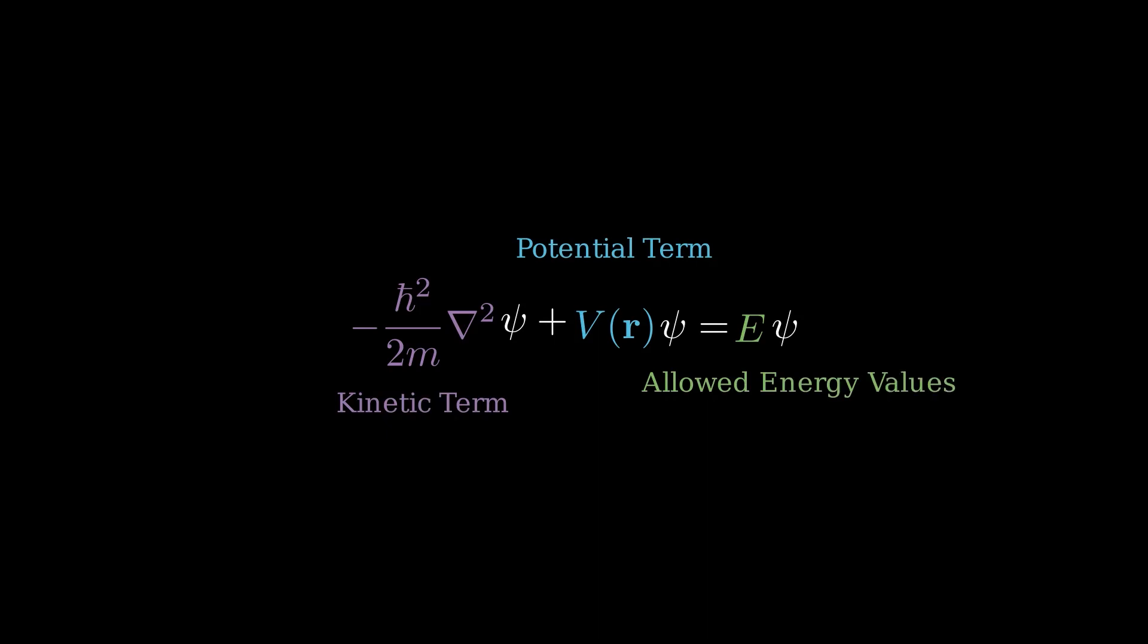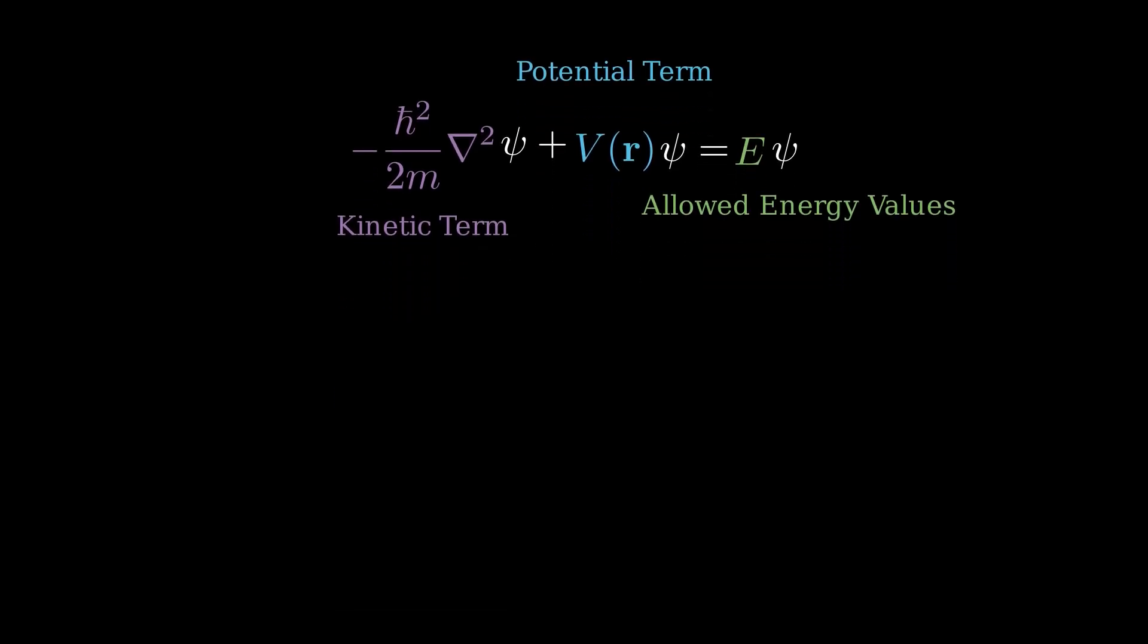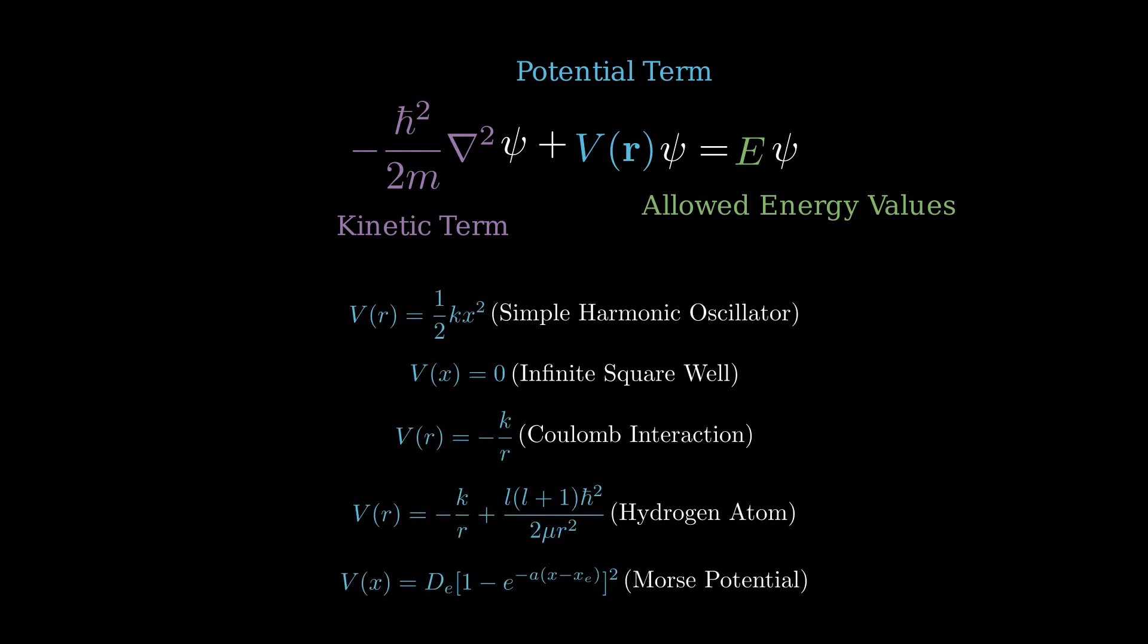For instance, it helps us understand the energy levels of electrons in a hydrogen atom. These are the orbits that you usually see. This equation accounts for a system's total energy, typically including the kinetic and potential energy terms at a minimum. The potential energy term varies with the system's physical environment.